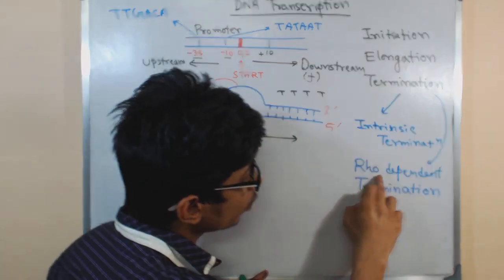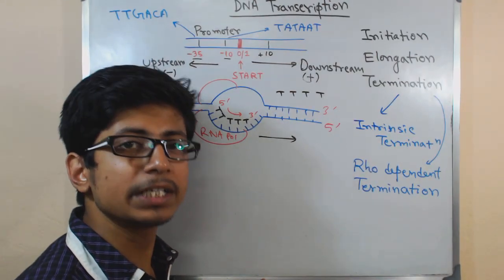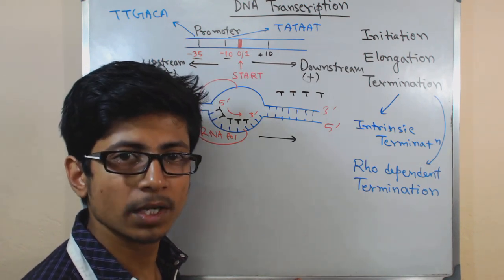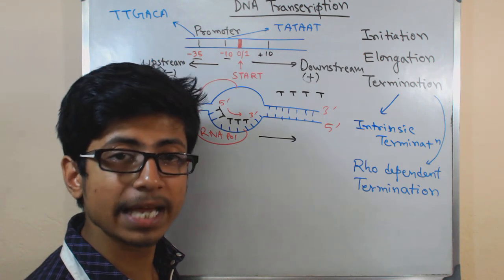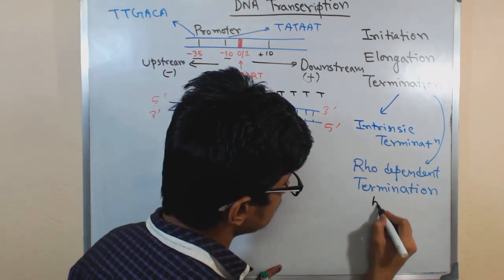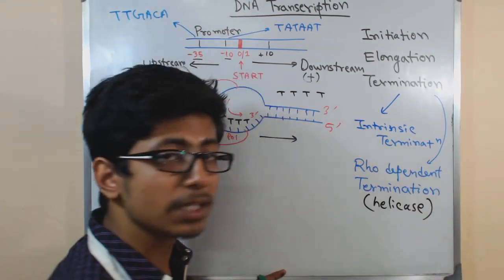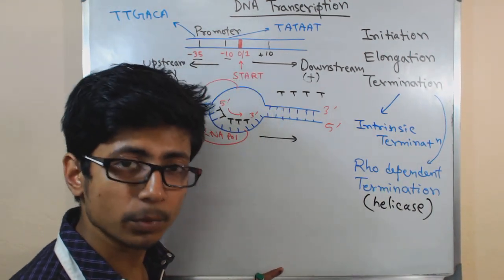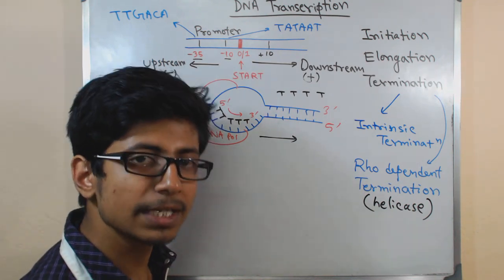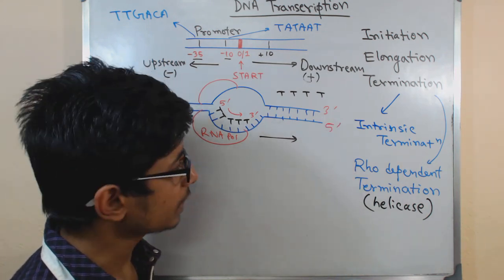On the other hand, rho-dependent termination involves a different enzyme called rho. The rho factor or rho enzyme is a helicase — specifically a hexameric protein helicase with six different subunits — which derives energy from ATP hydrolysis and can perform the termination.